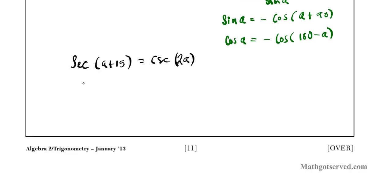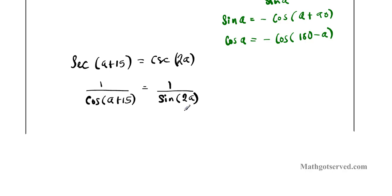So we are going to have, what are we going to have? We are going to have secant is cosine. So cosine is going to be 1 over cosine. 1 over cosine a plus 15 is equal to 1 over, the reciprocal of cosecant is sine, right? So 1 over sine 2a. So there you have it. Alright, so now we can cross multiply. We have sine 2a is equal to cosine a plus 15. Now what I'm going to do is I'm going to make use of the two reduction identities we talked about here. So sine a is negative cosine a plus 90. So let's apply that here.